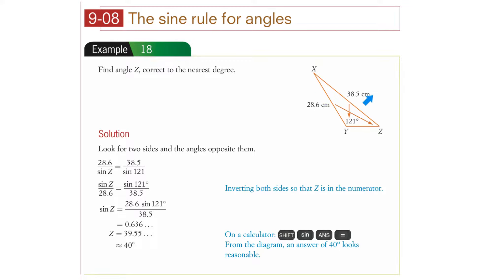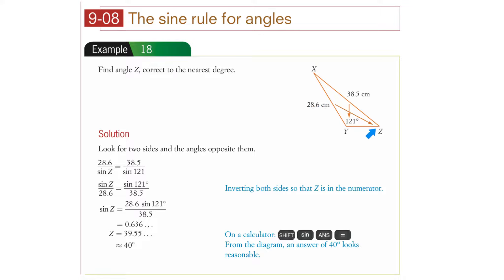We can use the ratios for the sine rule: sine A over A equals sine B over B equals sine C over C, or A over sine A equals B over sine B equals C over sine C. Remember, 121 degrees looks like the largest angle in the triangle, so we're expecting 38.5 to be the longest side. Since 28.6 centimetres is less than 38.5, we're expecting this angle to be less than 121.